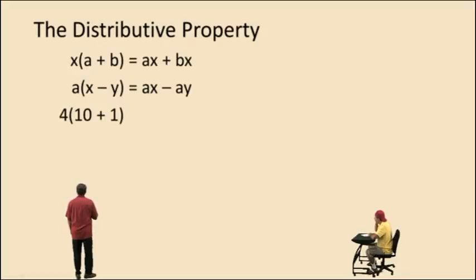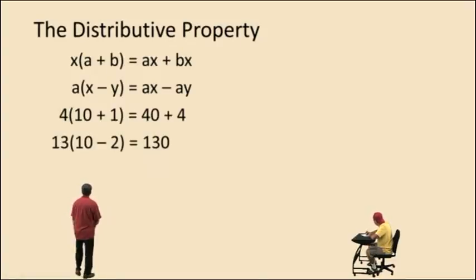Here we have 4 times 10 plus 1. 4 times 10 is 40 plus 4 times 1 is 4. Here we have 13 times 10 subtract 2. 13 times 10 is 130, subtract 13 times 2 is 26. This demonstrates how to use the distributive property.